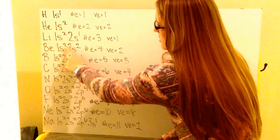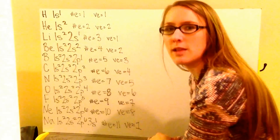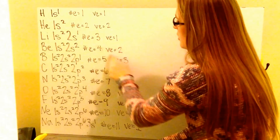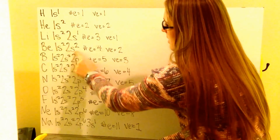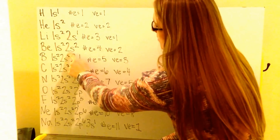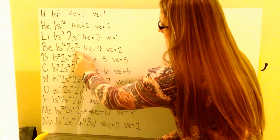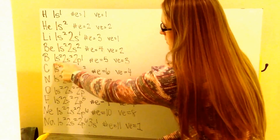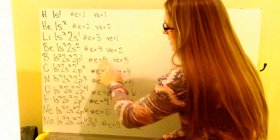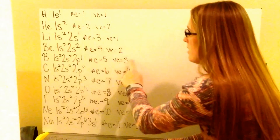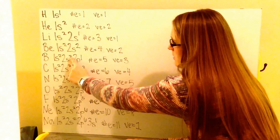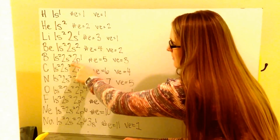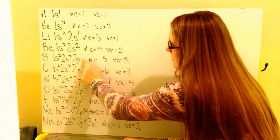Beryllium is 1s2, 2s2 — four total electrons. Notice that the number of electrons equals the number of protons in a neutral atom, and there are two valence electrons illustrated by the two in the highest energy orbital of 2s. It's a higher energy orbital than 1s because it's in the second energy level. Boron is 1s2, 2s2, 2p1 — five total electrons, 2 plus 2 plus 1. And there are three valence electrons — the 2 in the 2s and the 1 in the 2p, since my highest energy level includes all orbitals in the second energy level.